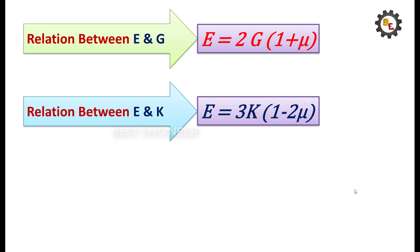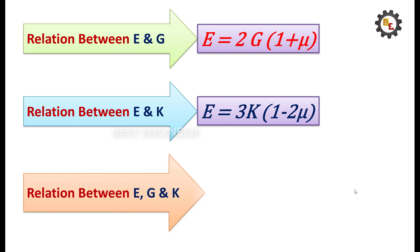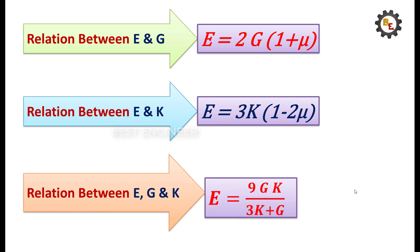Now the relationship between E, G, and K: E equals 9GK divided by (3K + G). Okay guys, thank you.